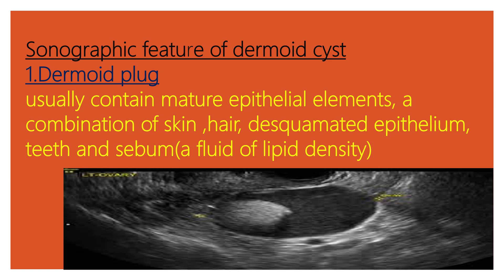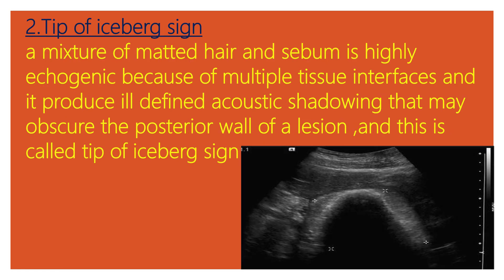Sonographic features of dermoid cysts. Number one, the dermoid plug. This usually contains mature epithelial elements — a combination of skin, hair, squamous epithelium, teeth, and sebum, a fluid of lipid density. Number two, the tip of iceberg sign. A mixture of matted hair and sebum is highly echogenic due to multiple tissue interfaces and produces ill-defined acoustic shadowing that may obscure the posterior wall of the lesion.